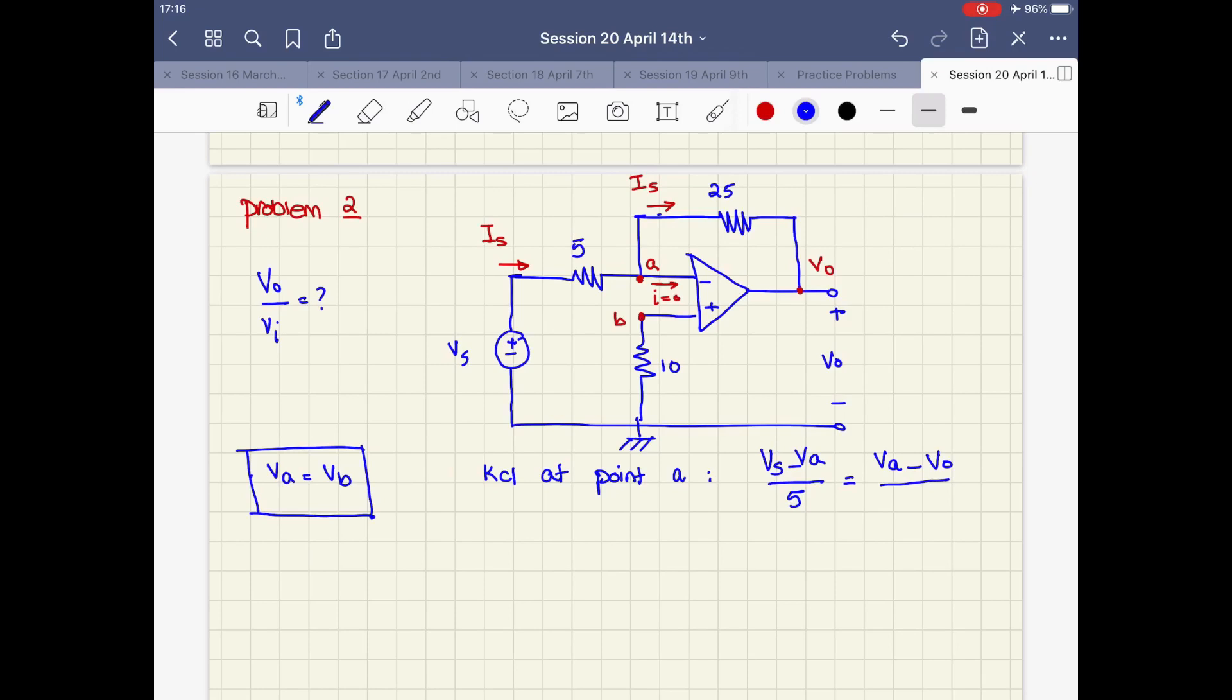Right now, what I want to do is take out va from this equation number one. Why? Because I need the relationship between vo and vs, so I don't need this va. How can I do that? I'm going to write a KCL here for this branch.